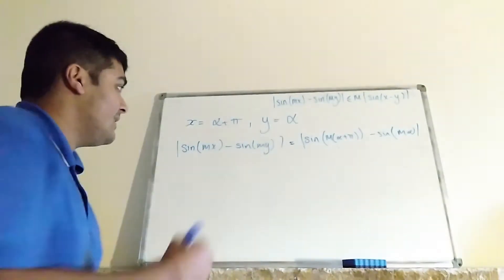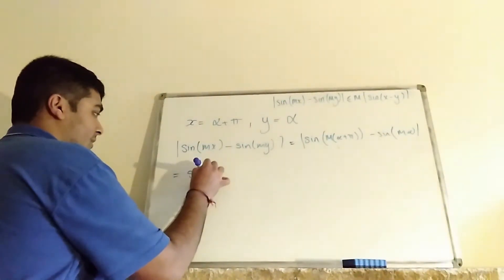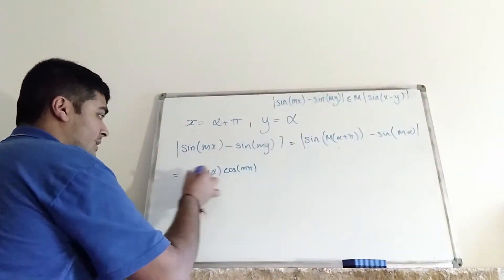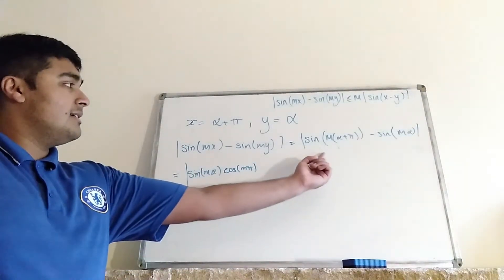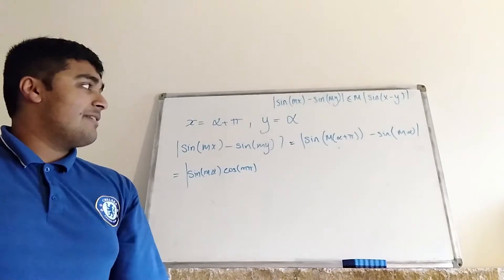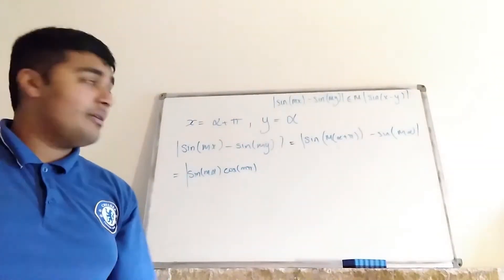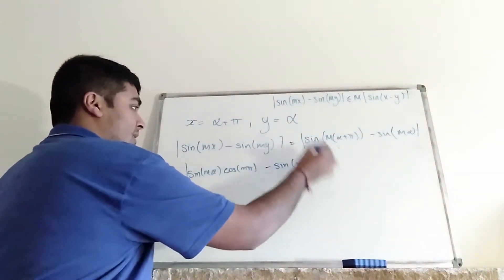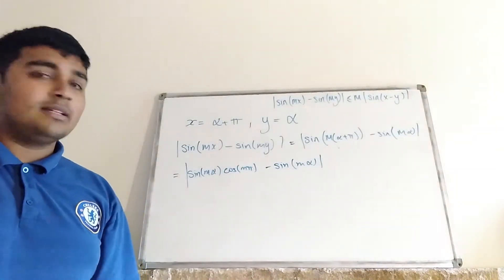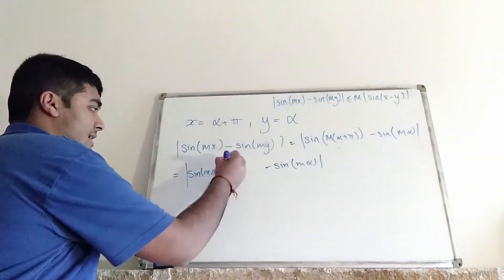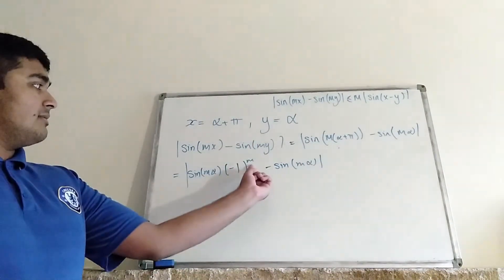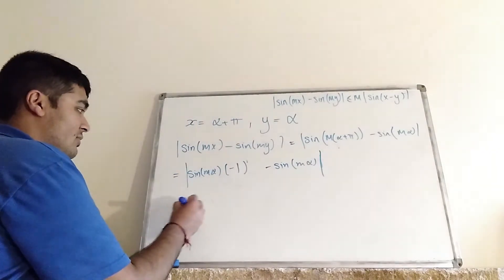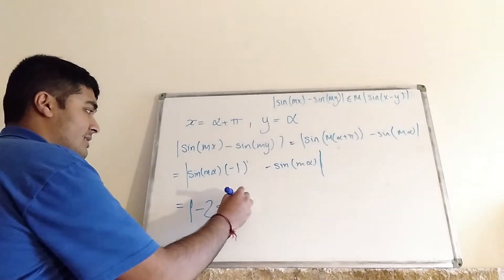Now let's use our double angle formula on this. This is going to be equal to sine(mα)·cosine(mπ) plus sine(mπ)·cosine(mα). But we know that m is an integer, and thus sine(mπ) is zero — so that term vanishes. And then of course we've still got the minus sine(mα). Now cosine(mπ) is just (−1)^m, and because m is odd, (−1)^m is just −1. So we've got −1 times sine(mα) minus sine(mα), which is the absolute value of −2·sine(mα).